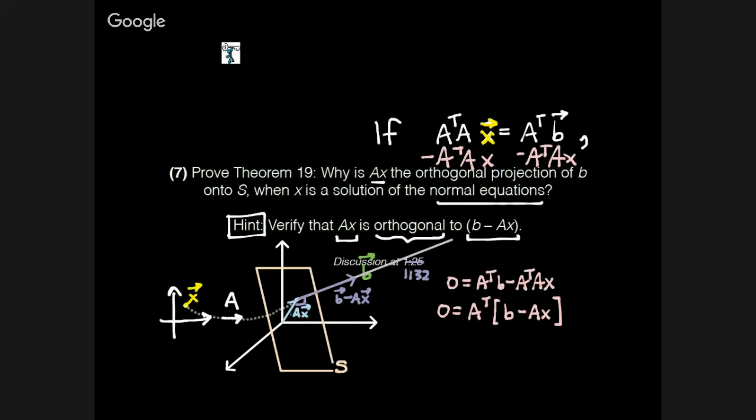So now my question is, I agree completely with everything Jamie has said, so my question is, how does this prove the statement? We have this equation zero is equal to A transpose times B minus Ax. What is that actually telling us about this diagram?